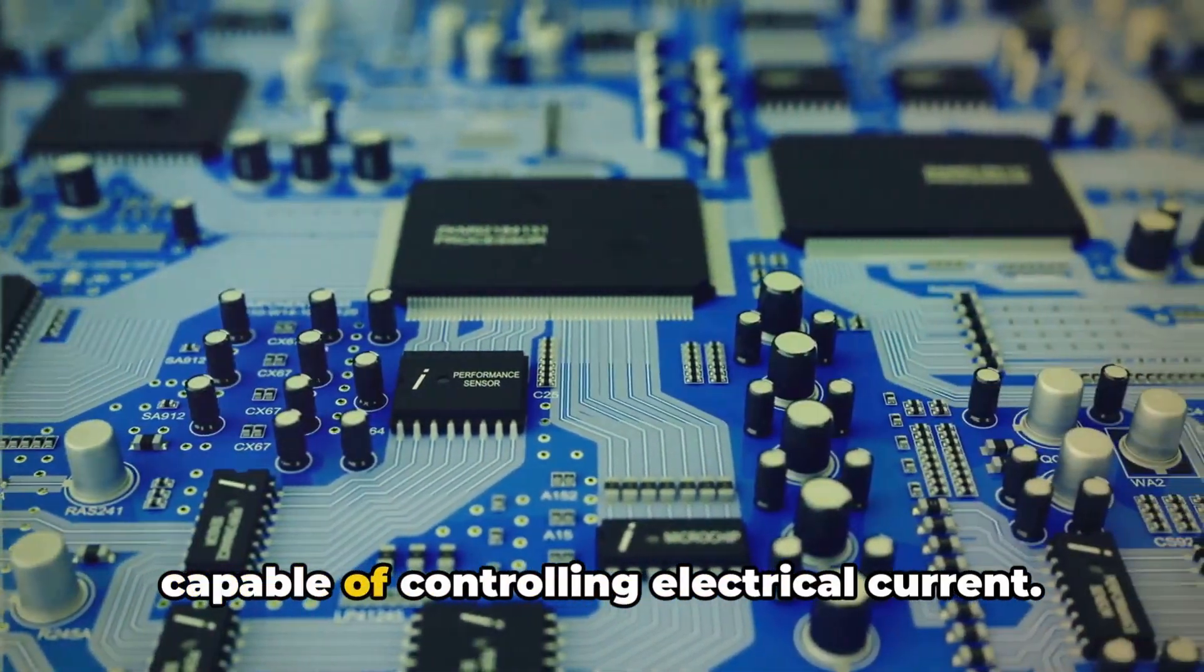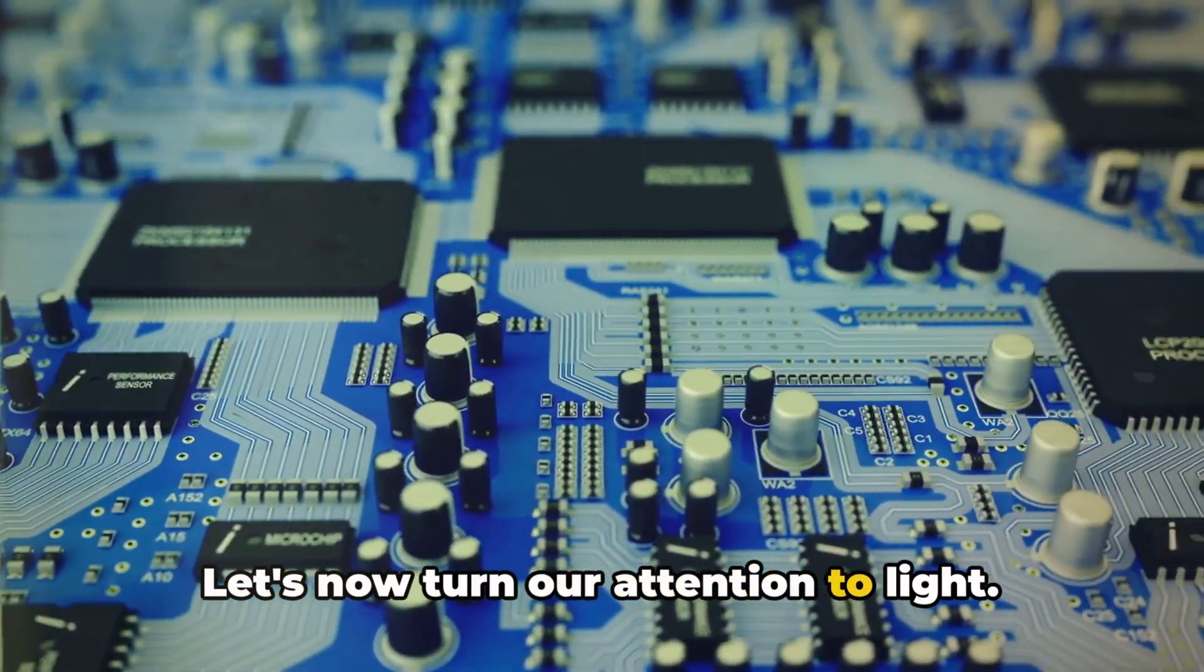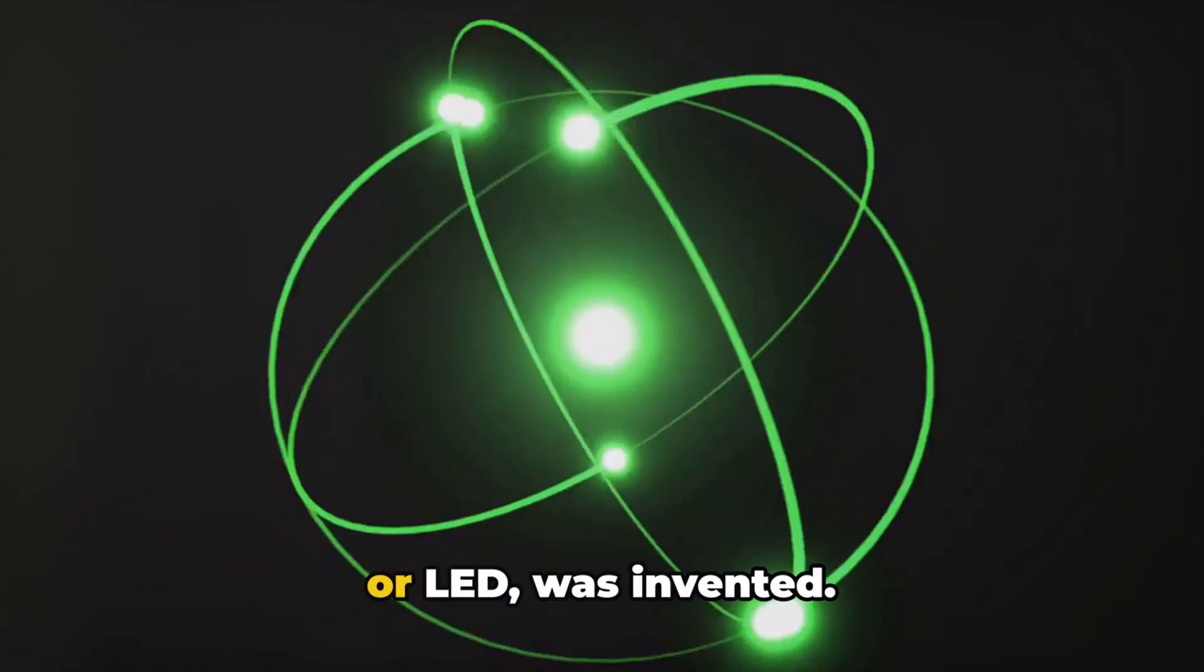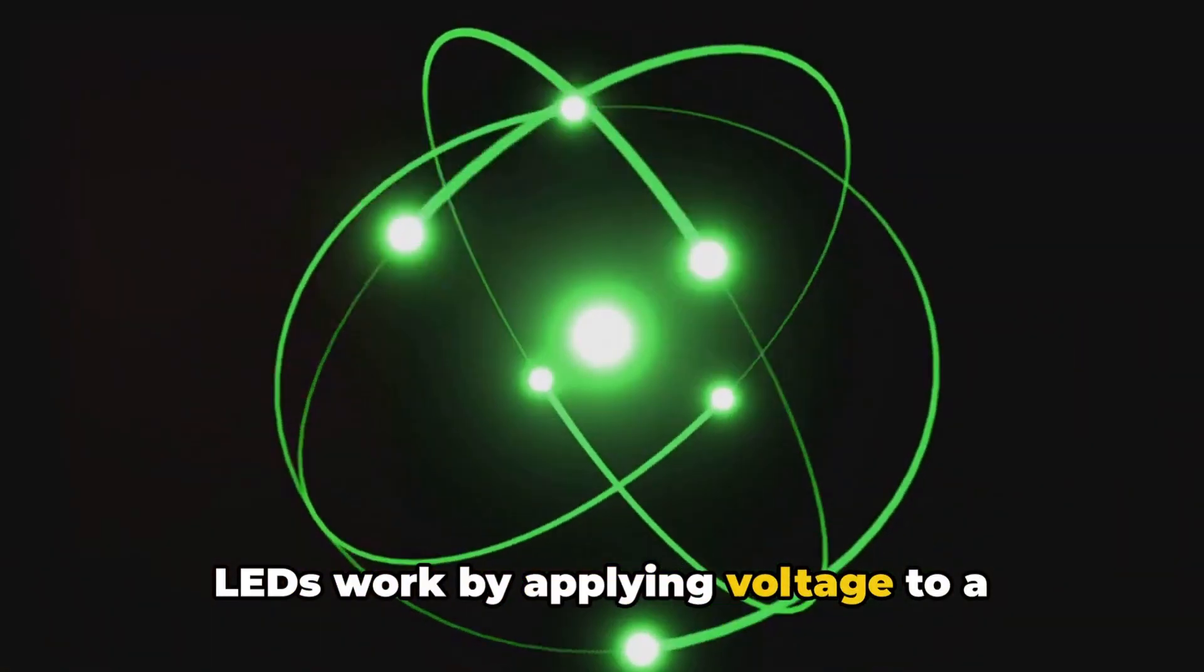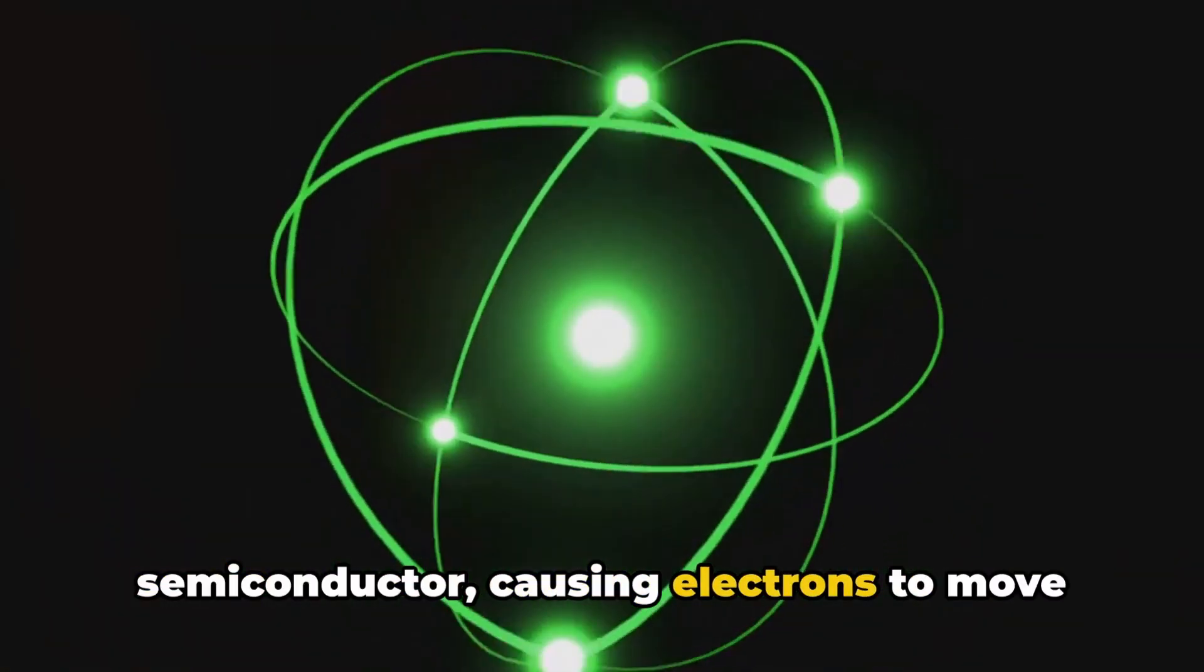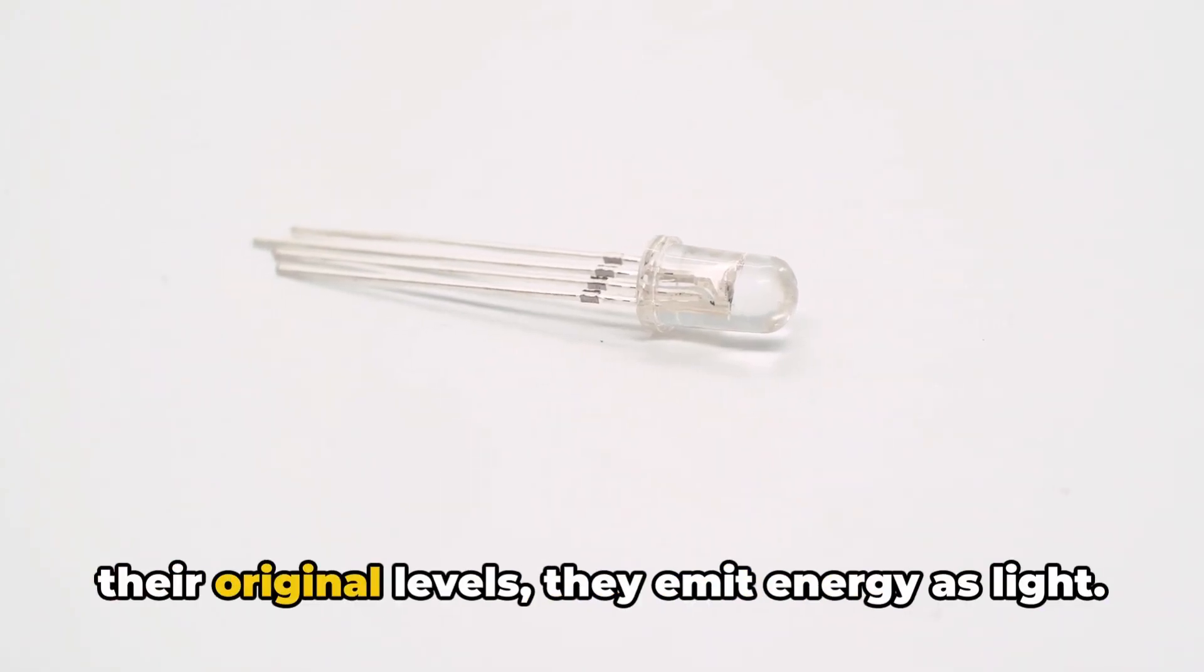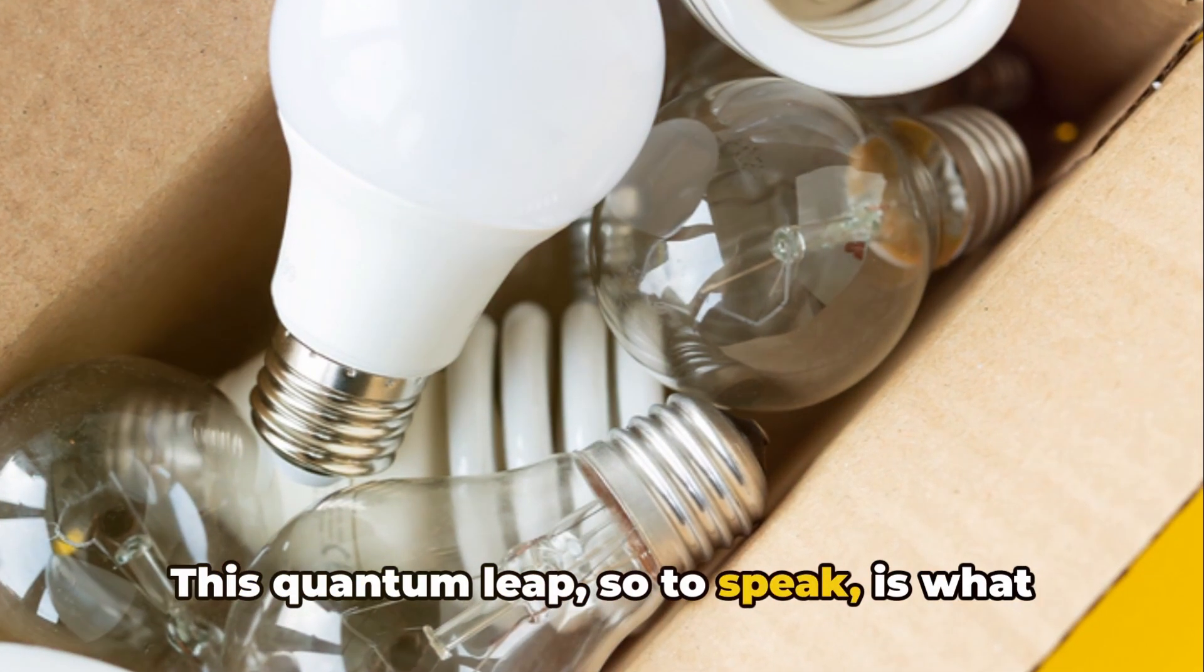Let's now turn our attention to light. In the 1960s, the light emitting diode, or LED, was invented. LEDs work by applying voltage to a semiconductor, causing electrons to move to higher energy levels. When these excited electrons return to their original levels, they emit energy as light. This quantum leap, so to speak, is what lights up your LED screens and bulbs.